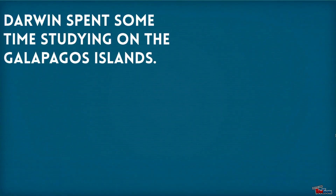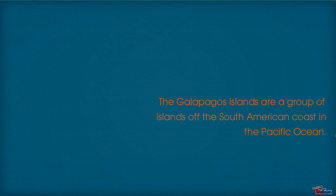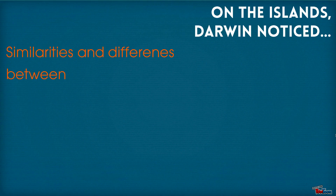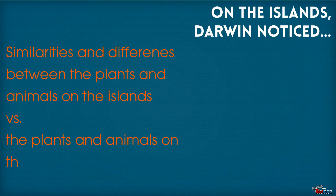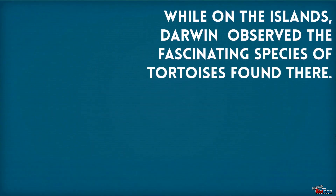Darwin spent some time studying on the Galapagos Islands. The Galapagos Islands are a group of islands off the South American coast in the Pacific Ocean. On the islands, Darwin noticed similarities and differences between the plants and animals on the islands versus the plants and animals on the South American mainland.